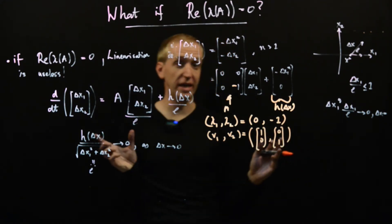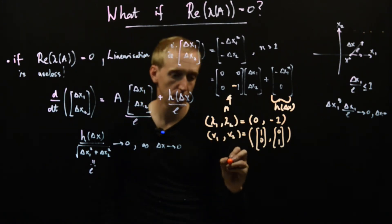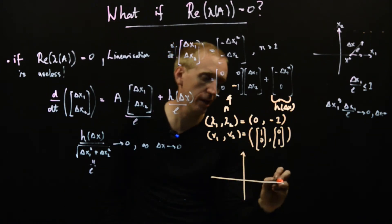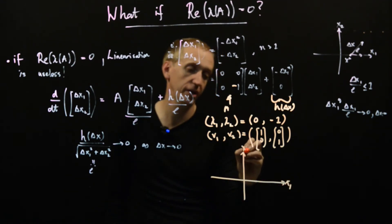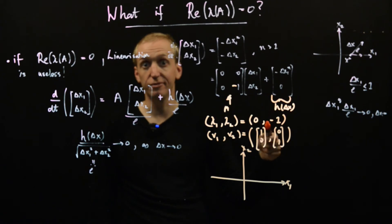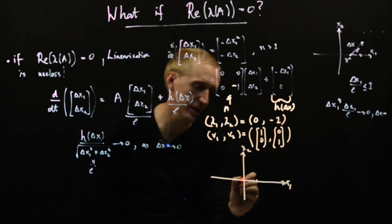So now let's just sketch what's going on on our phase portrait. So we draw on our axes in the usual way. So here we have x1, here we have x2. And now let's look at the good eigenvalues, the eigenvalue which doesn't have 0 real part.